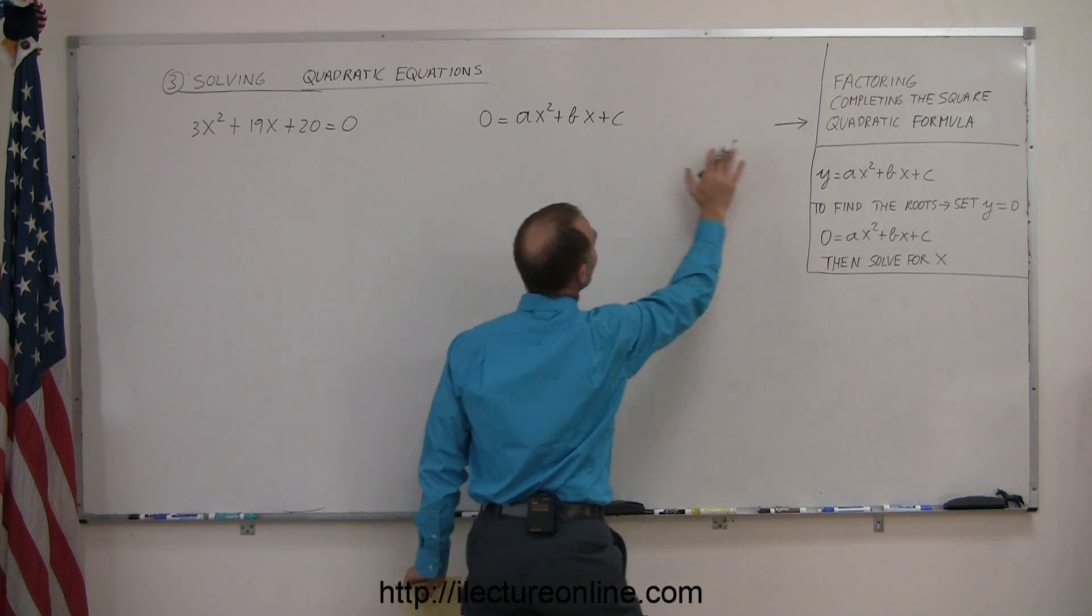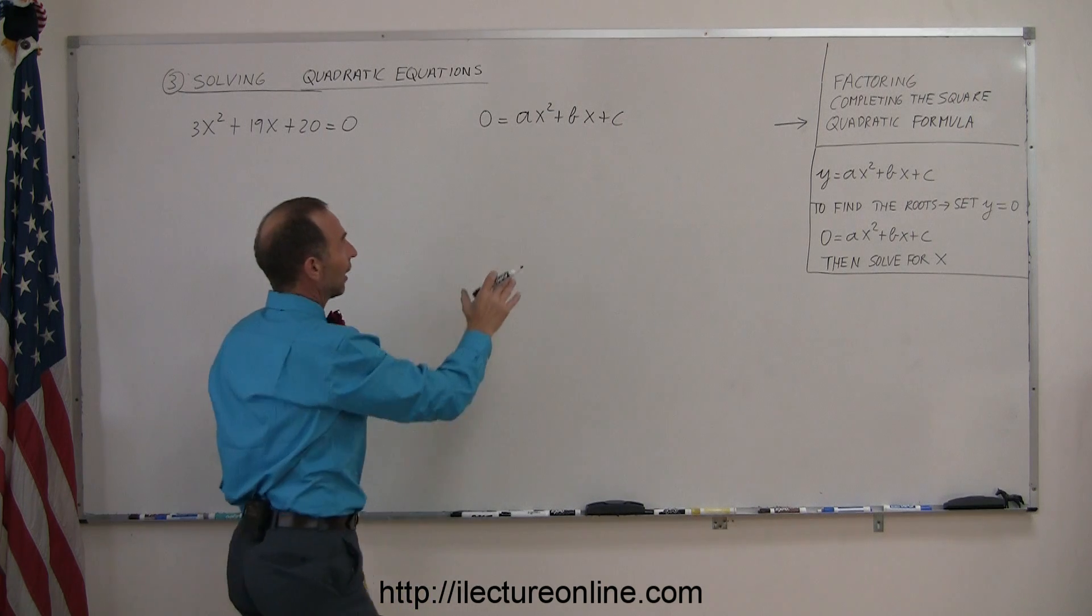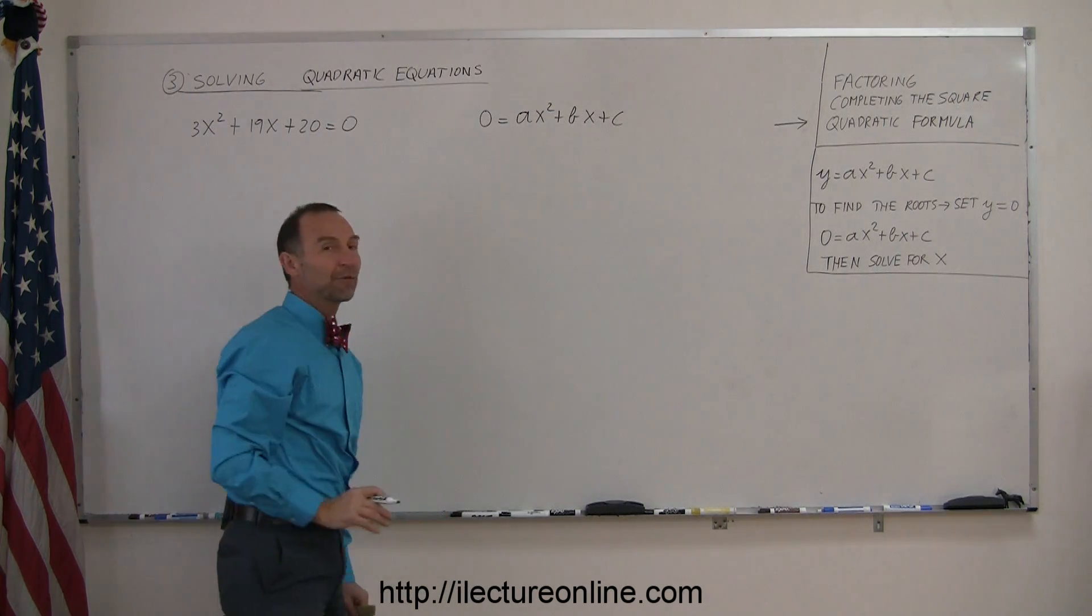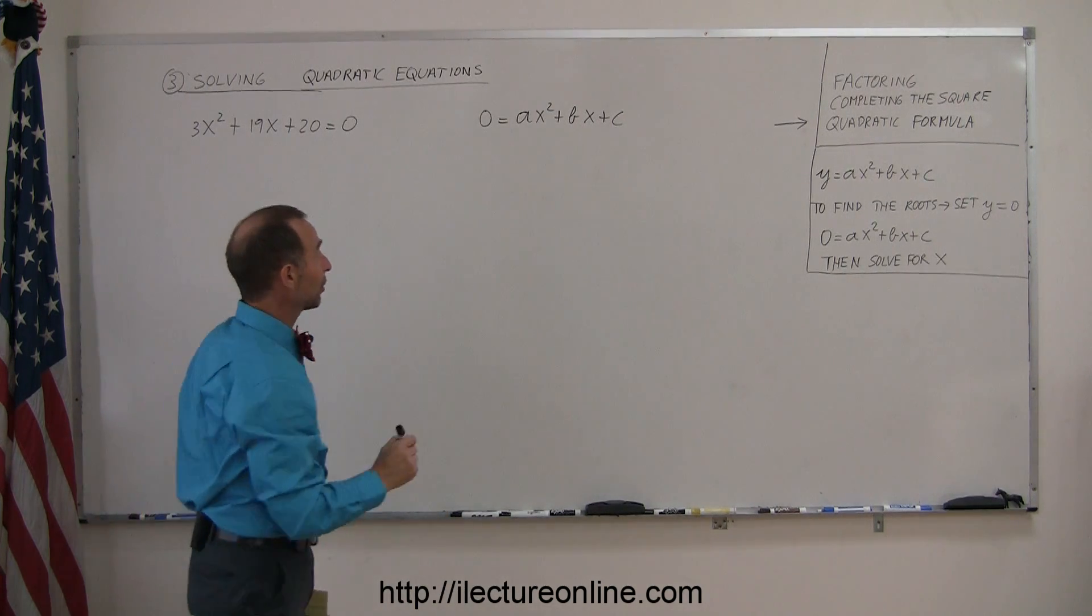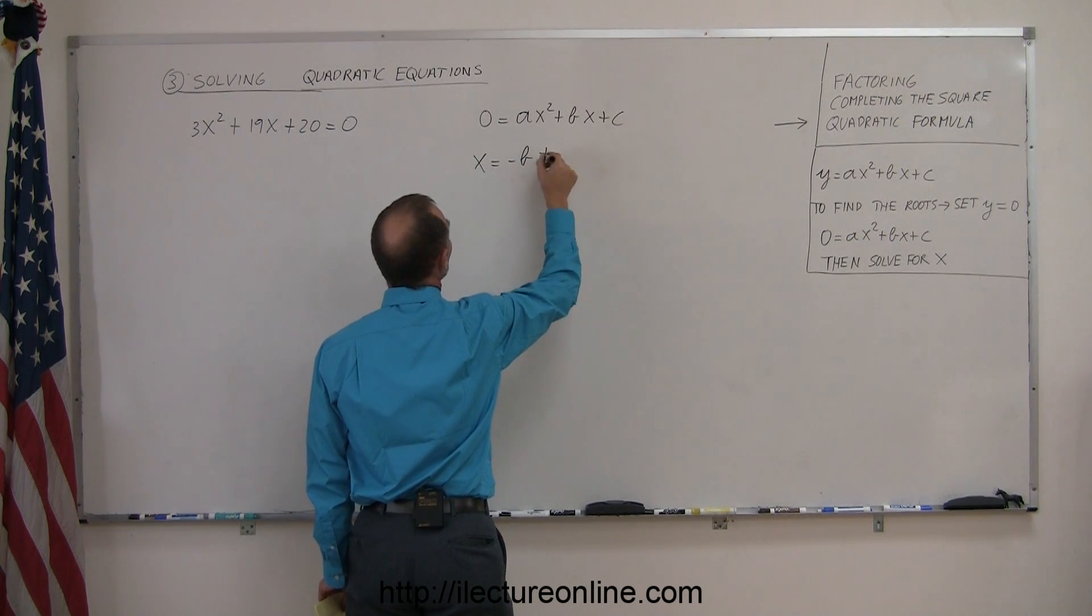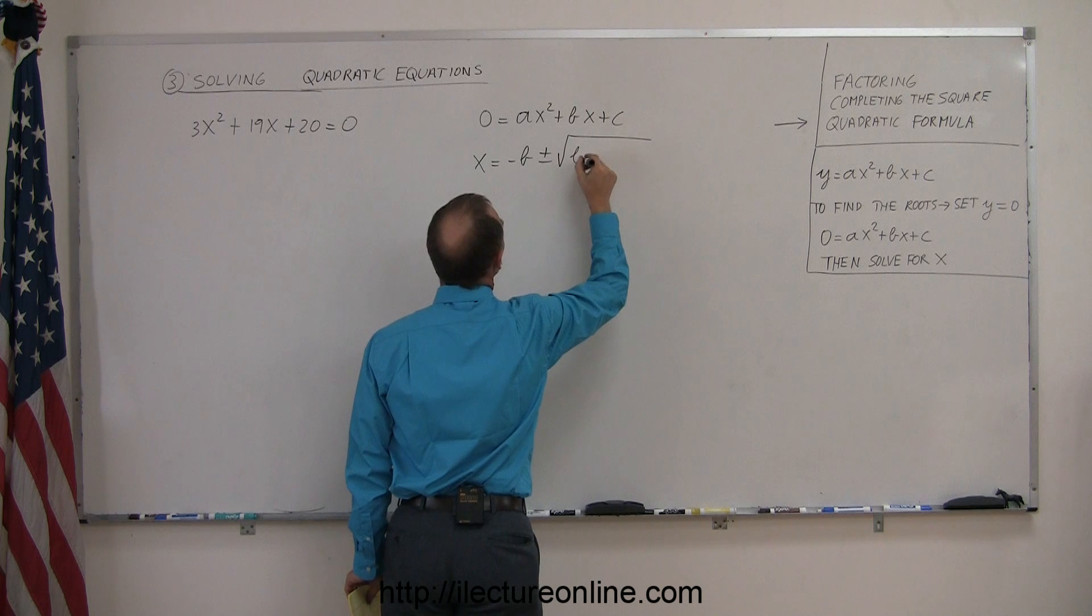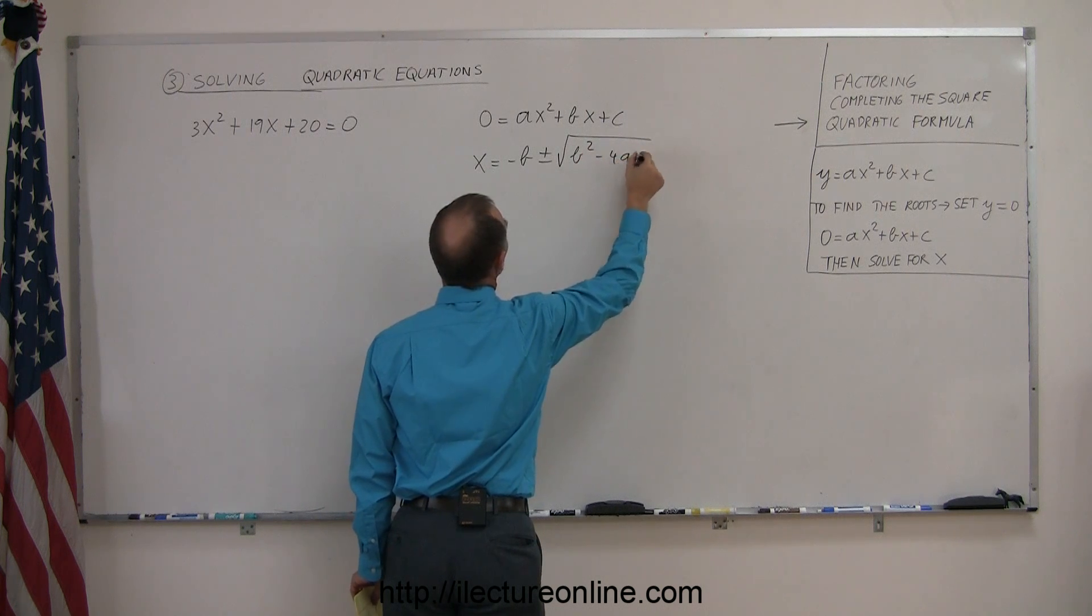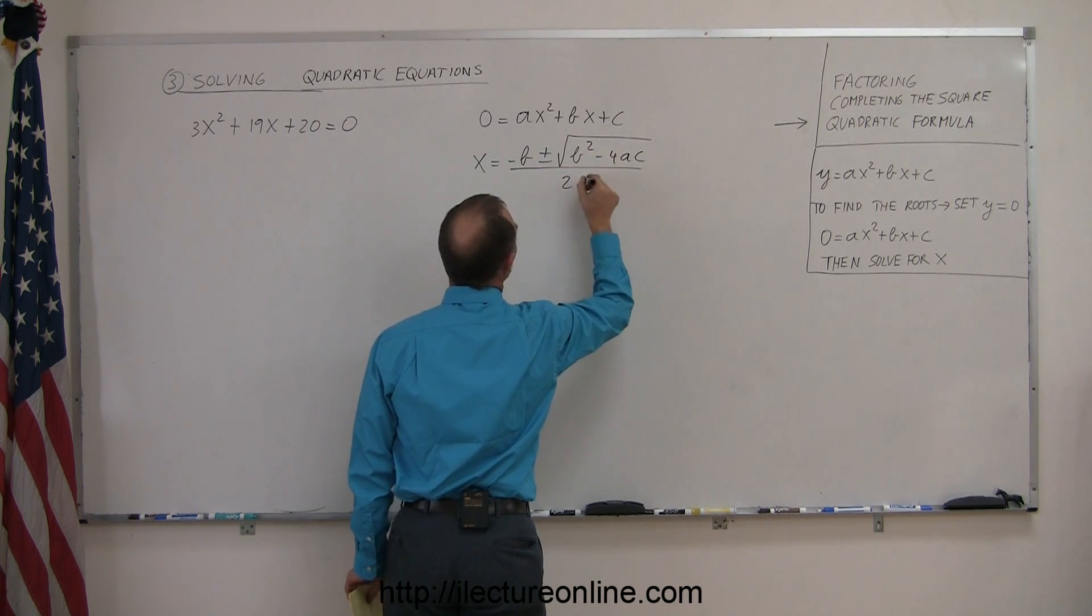If we use the completion of the square method and solve this general form of the equation, guess what you'll end up with? You'll end up with x is equal to minus b plus or minus the square root of b squared minus 4ac all divided by 2a.